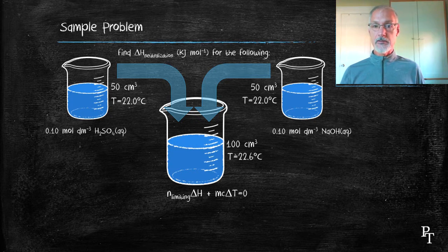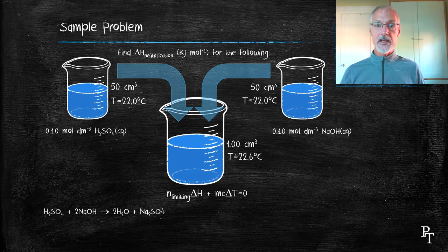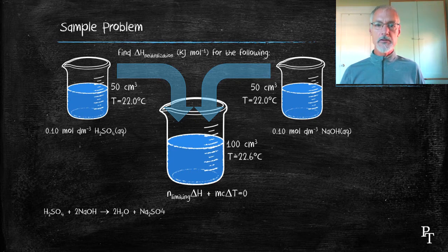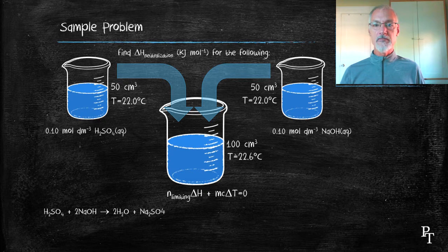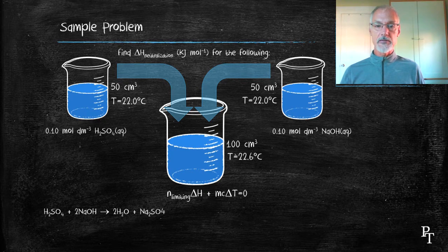Well, let's take a look at the balanced chemical equation for a moment. Here I can see that one sulfuric acid requires two sodium hydroxides. If I look up at the information I'm given, I have equal number of moles of sulfuric acid and an equal number of moles of sodium hydroxide. I know that because I have the same volumes and the same concentrations.